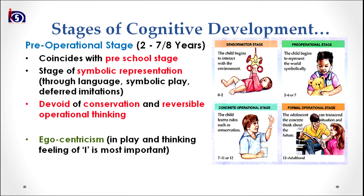The child continues to believe the quantity has changed even if the shape or form is reversed back to the original. Therefore, the pre-operational stage is understood as devoid of conservation and reversible operational thinking. Egocentrism is the main characteristic of this stage — the feeling of 'I' is most important for the child, and all of the child's world is centered around himself or herself.